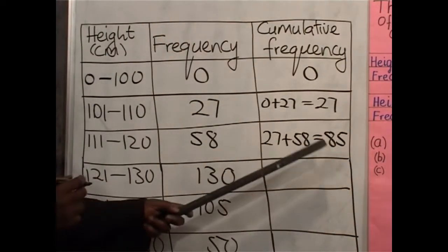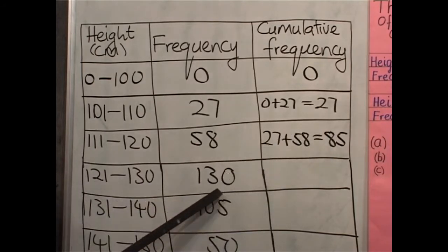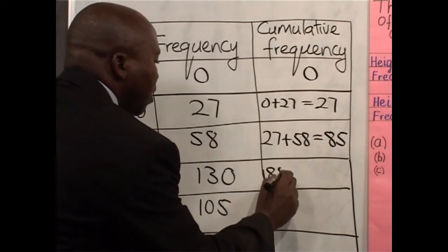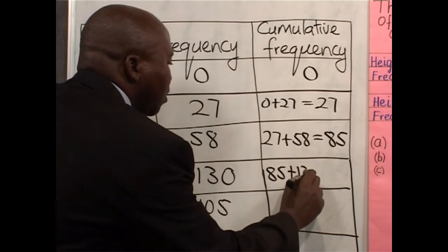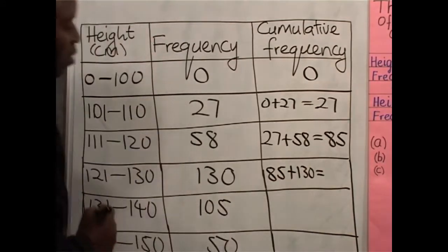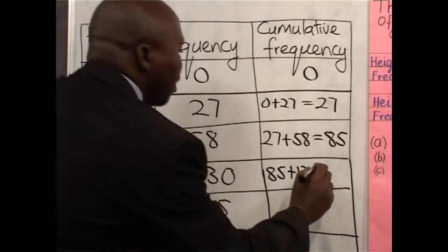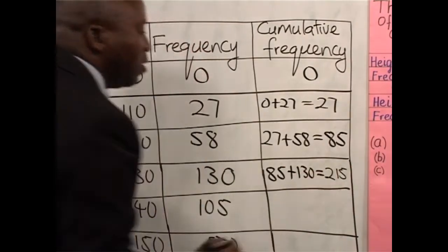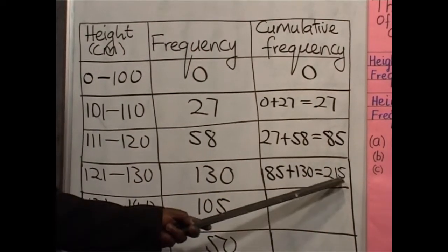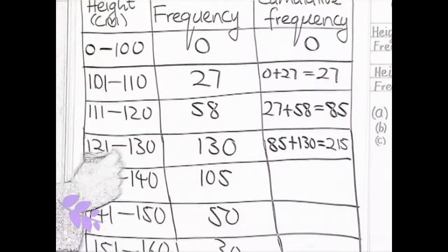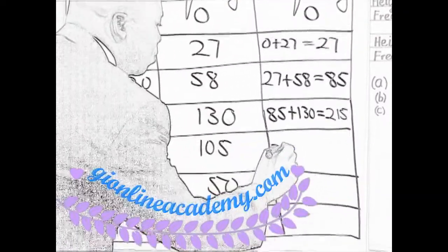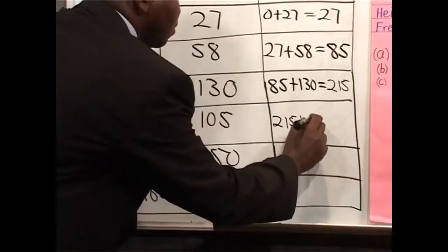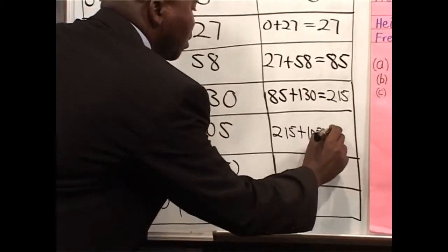Then 85 plus 130. 85 plus 130. When we work out this, we'll find 215. Then 215 plus 105. 215 plus 105. You get 320.